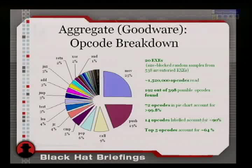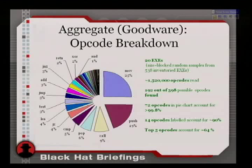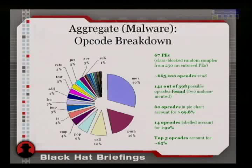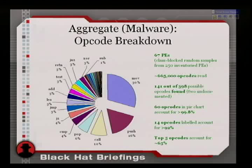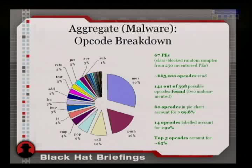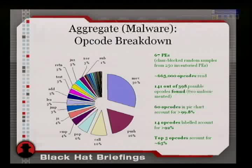As you would expect, MOV is in there, along with push, call, pop, and so on. That's for the good software. For the malware — aggregated across 67 samples, drawn from my 250 — we have a similar picture: the top five opcodes cover about two-thirds, the top 14 cover over 90%, and the top 60 cover 100%.